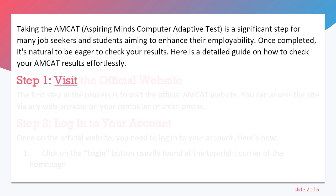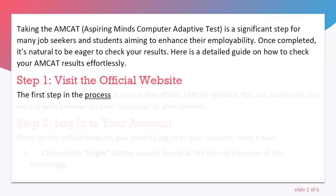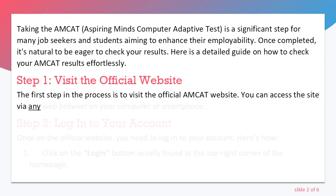Step 1: Visit the official website. The first step in the process is to visit the official AMCUT website. You can access the site via any web browser on your computer or smartphone.